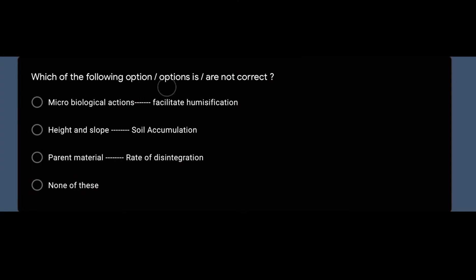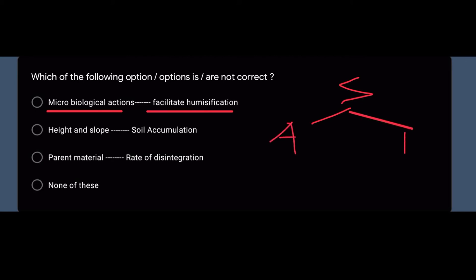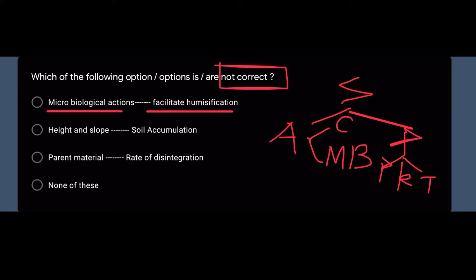Which of the following options is NOT correct? Option number one: Microbiological Actions Facilitate Humification. You know that soil formation factors fall into two broad categories — first is active factors and second is passive factors. Active factors generally include climate and microbiological actions. Microbiological actions play a very important role in the process of humification.